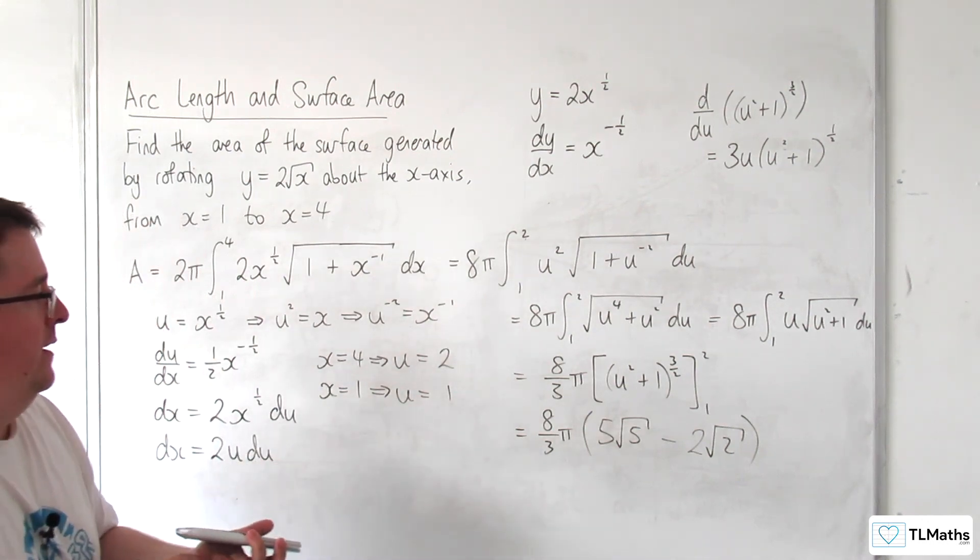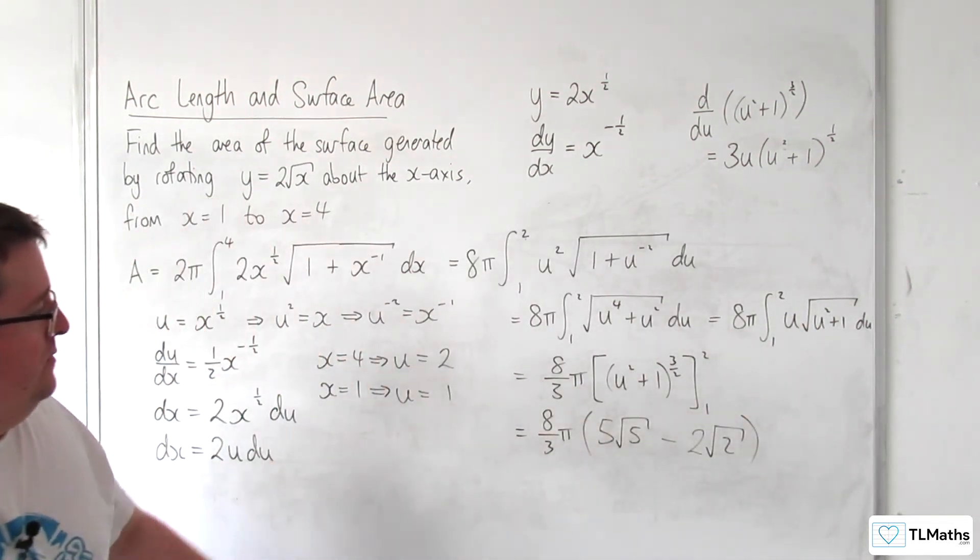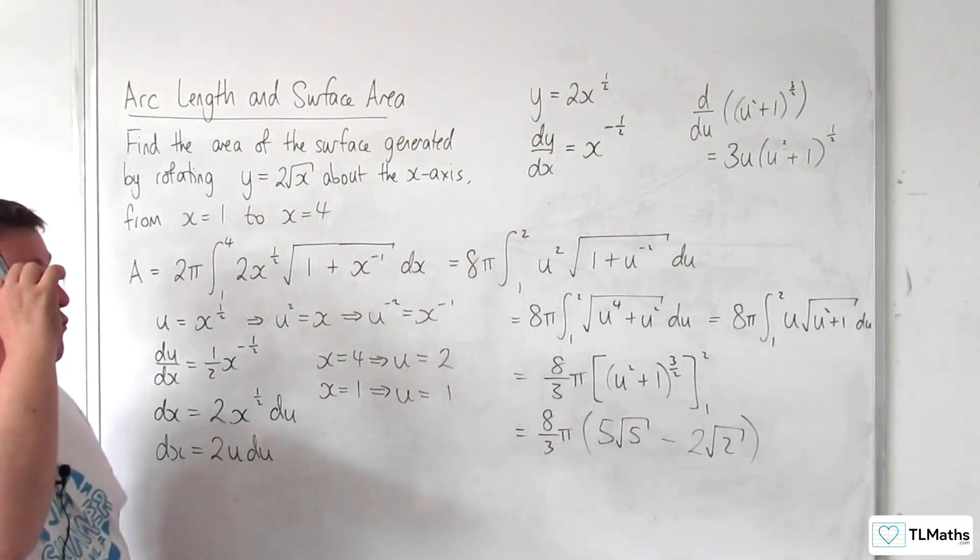And so my final answer, and the exact surface area that I needed, was 8 thirds pi times 5 root 5, take away 2 root 2.